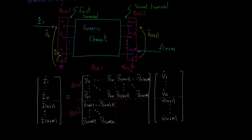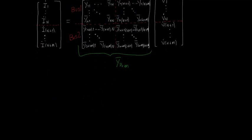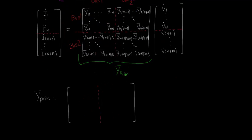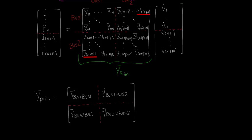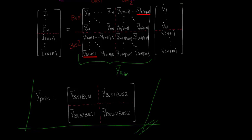As you can notice, the Y primitive can be split in four sub-matrices. The first sub-matrix, Y bus1 bus1, is constituted by the self and the transference admittances of bus 1 nodes — in our case, nodes 1 to N. The sub-matrices Y bus1 bus2 and Y bus2 bus1 are constituted by the transference admittances between nodes of bus 1 and bus 2. In other words, the indexes of each node admittance in these two sub-matrices contain a node from bus 1 and a node from bus 2 — for example, Yn+m,1 in Y bus2 bus1 and Y1,n+m in Y bus1 bus2. Finally, the sub-matrix Y bus2 bus2 is constituted by the self and the transference admittances of the bus 2 nodes, node N+1 to node N+m.